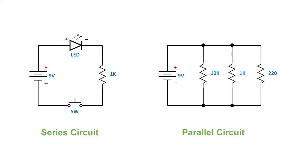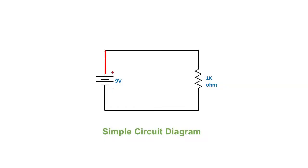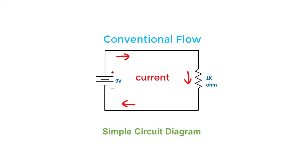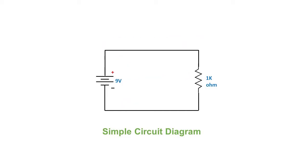Let us start with a very simple connection. Consider this diagram: a 9 volt battery with its positive terminal connected to a 1 kilo ohm resistor. The other pin of the resistor is connected to the negative terminal of the battery to close the circuit connection so that the current can flow. Some diagrams will show you that the current flows from the positive terminal through the circuit and into the negative terminal — this is known as conventional flow, which is commonly used by engineers in their diagrams. On the other hand, electron flow, which is the actual flow of current, is where electrons flow from the negative terminal through the circuit and into the positive terminal.